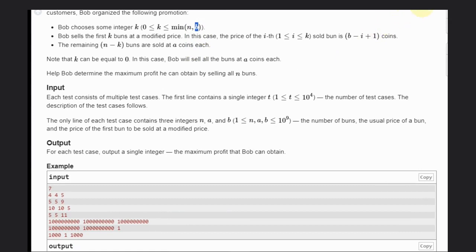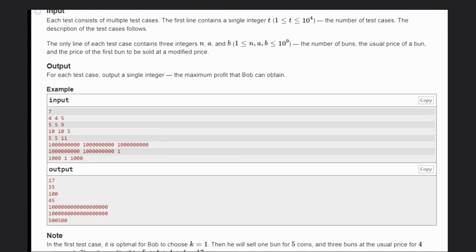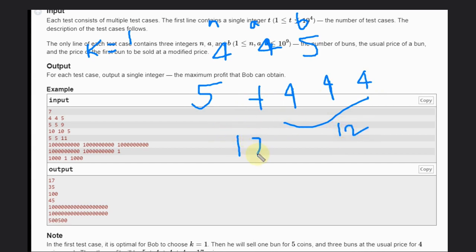Let's see the first example: we have 4, 4, 4, and 5, representing n, a, and b. If he chooses k equal to 1, that means he wants to sell only one item with the modified price. He can sell one at 5, and the remaining will be 4, 4, and 4. This gives us 12 plus 5, which equals 17, and that is our answer.